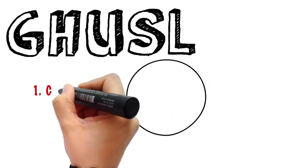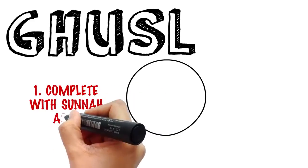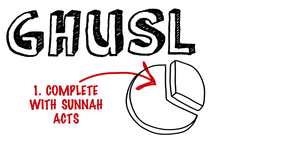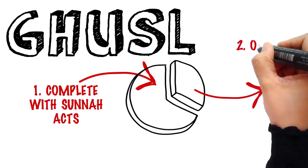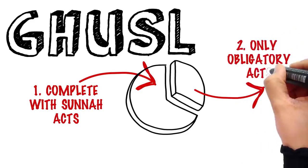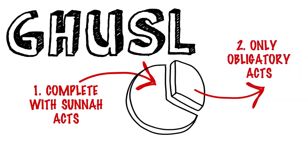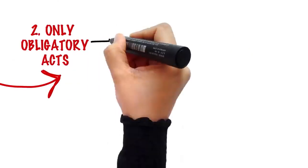And ghusl can be taken in two ways: a complete ghusl with all the sunnahs of the Prophet, and a partial or a sufficient ghusl, which means only doing what is obligatory to free yourself from the ritual impurity.